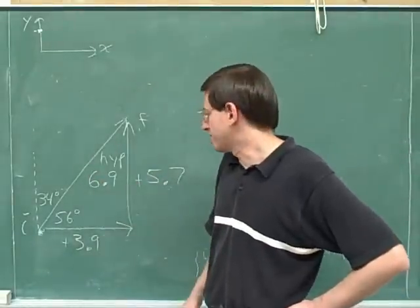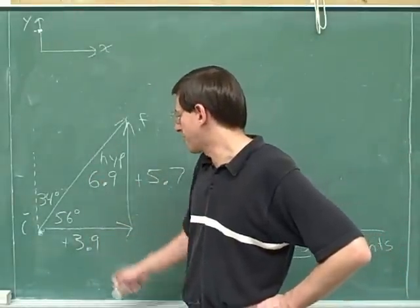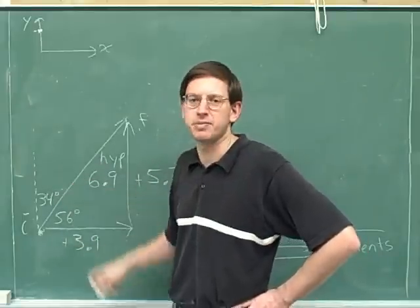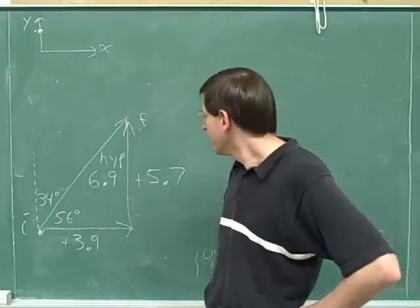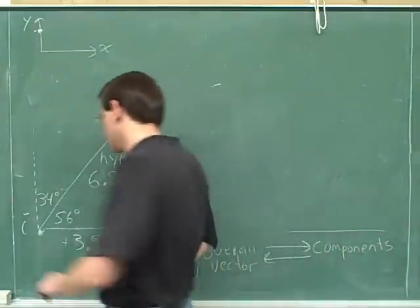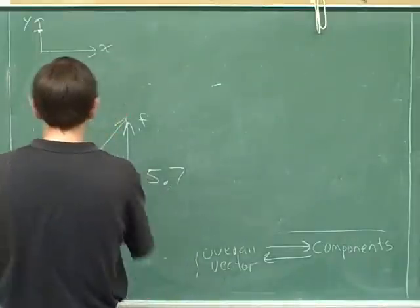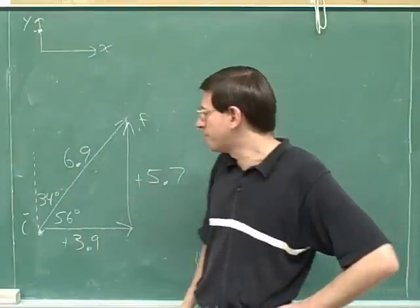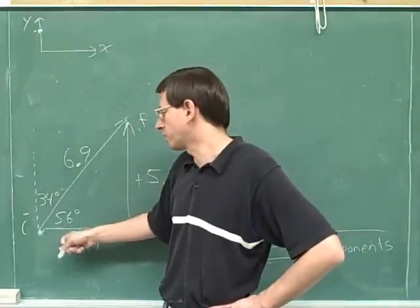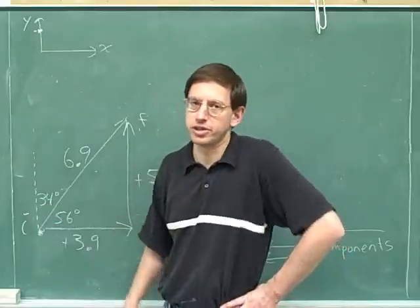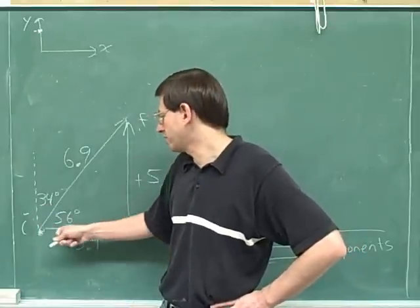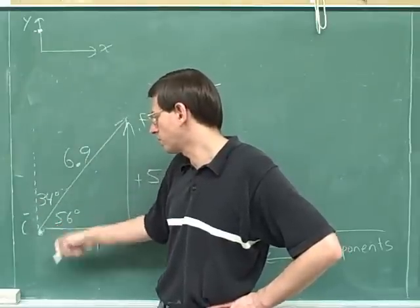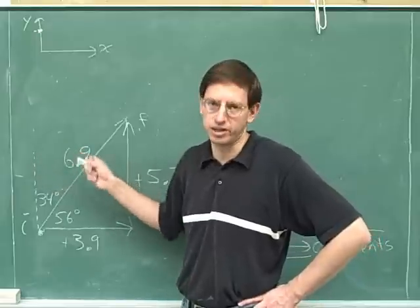Probably a lot of you, when writing down the overall resultant vector, put the triangle on the bottom of the overall vector instead of on top. Maybe this seems a little more natural — that's perfectly OK. You should still have gotten the same answers. You should still have gotten that the overall resultant vector was 6.9, but you would get a different angle because you'd be focusing on the angle at the horizontal, so you would have gotten 56 degrees, not 34 degrees. If you made this right triangle and got 56 degrees, that's perfectly fine.